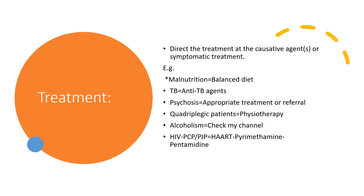You can check my channel for tuberculosis — I've made about five or six publications on it, including treatment. In psychosis, embark on appropriate treatment or refer immediately. In quadriplegic patients, physiotherapy will be helpful. In alcoholism, you can check my channel for a full presentation. In HIV with Pneumocystis jirovecii pneumonia, we should give highly active antiretroviral therapy with Pyrimethamine or Pentamidine.